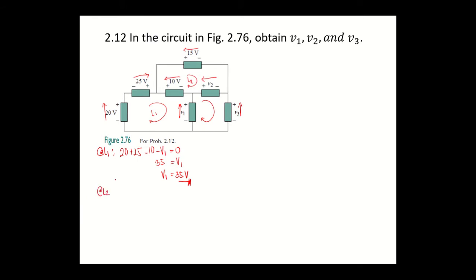At loop 2, we have voltages of 10 volts, 15 volts, and V2. Your 15 volts opposes the direction of your loop, so it would be negative 15 volts. Your V2 is in the same direction as your loop, so it would be positive V2. Your 10 volts has the same direction as your loop, so positive 10 volts, equal to 0. So you have negative 15 plus 10, giving negative 5 plus V2 equal to 0. Transposing, V2 is equal to positive 5 volts.